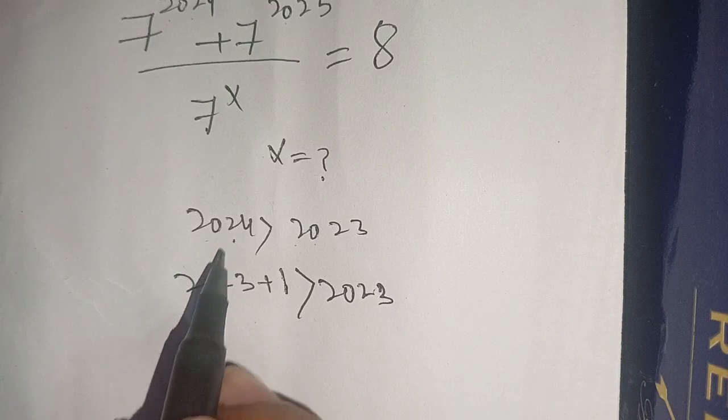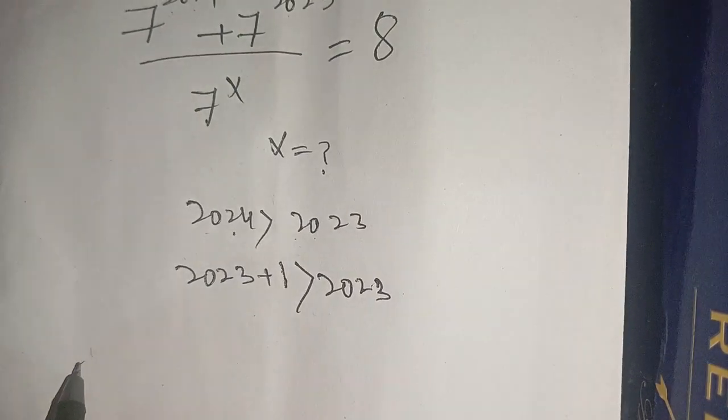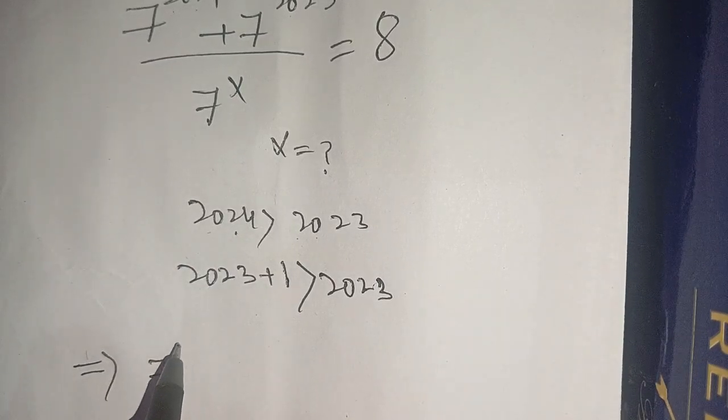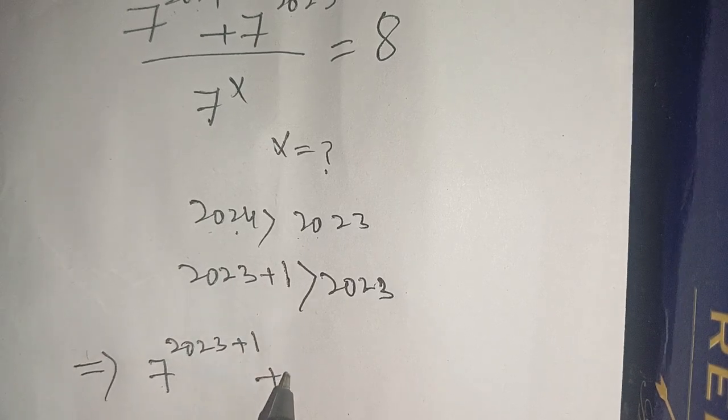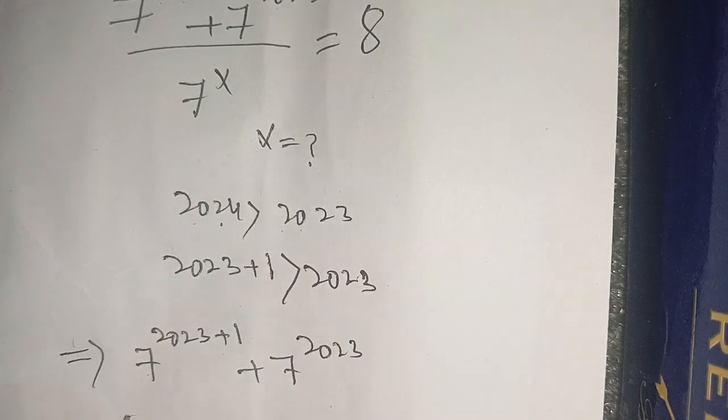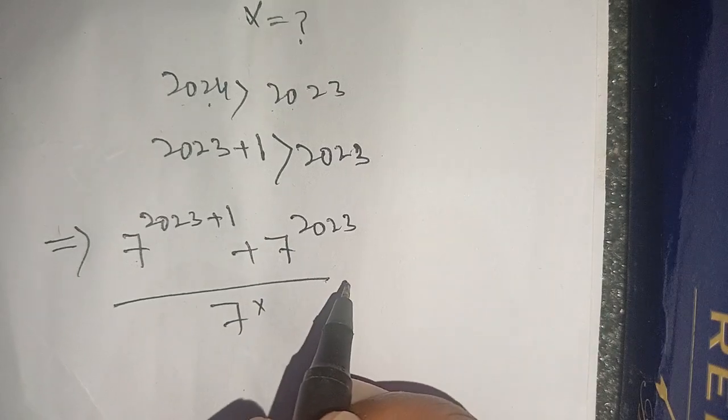Now replace 2024 in terms of 2023. Thus our equation will become 7 power 2024, we write it as 2023 plus 1, plus 7 power 2023, divided by 7 power x is equal to 8.